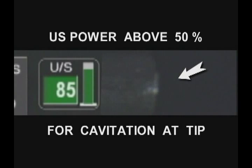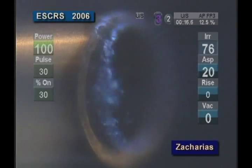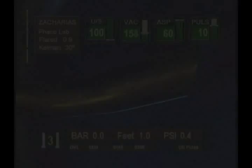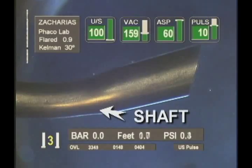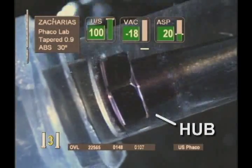We revealed that cavitation mainly occurs in close proximity to the tip of the phaco needle, and that it only appears at high ultrasonic powers of 50% or more. We also found that cavitation not only occurs at the tip of the phaco needle, but also along the shaft and in proximity to the hub at the proximal portion.